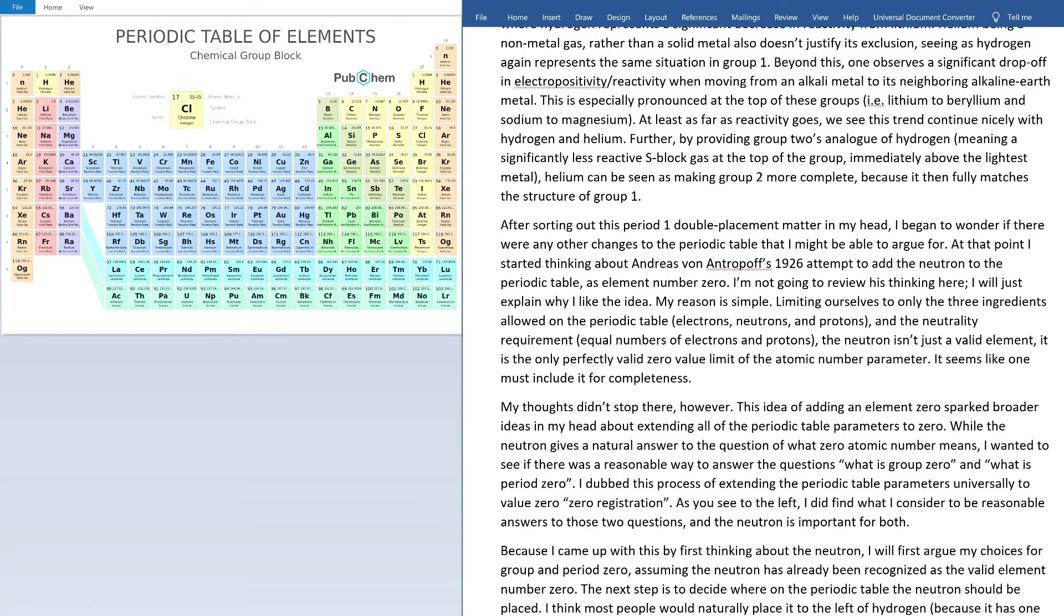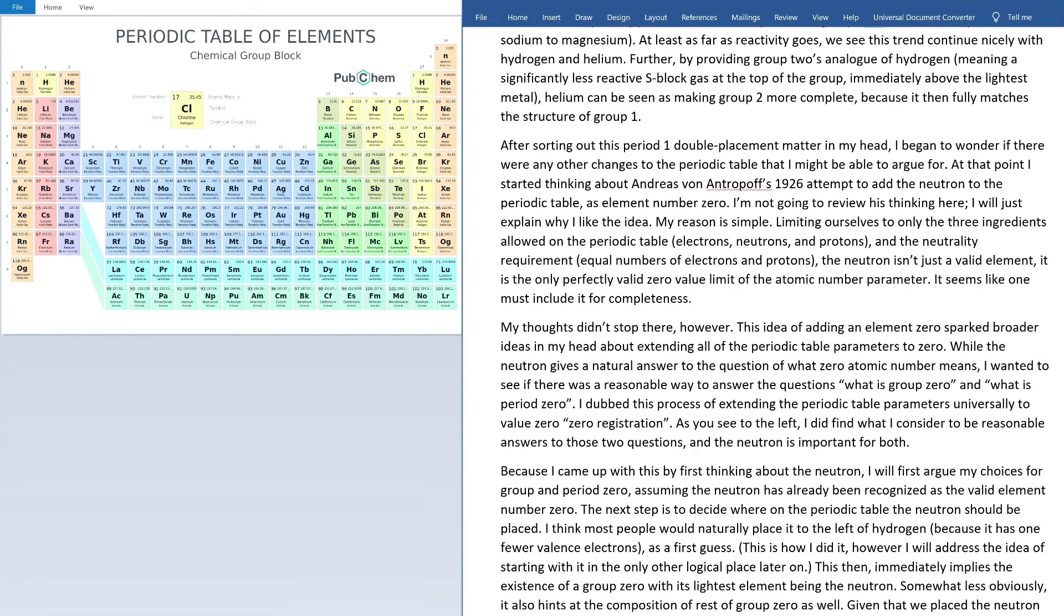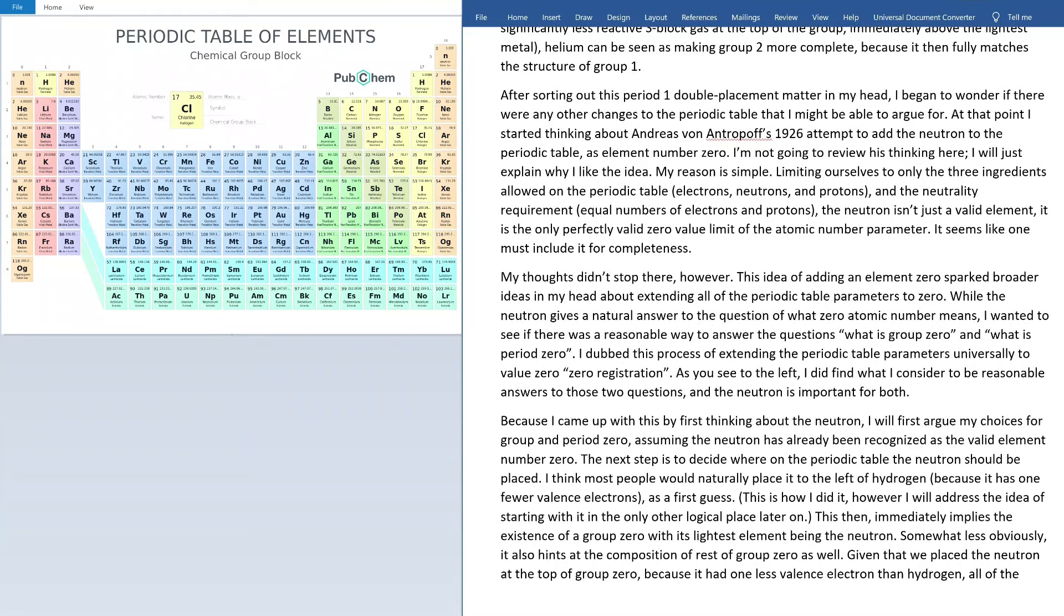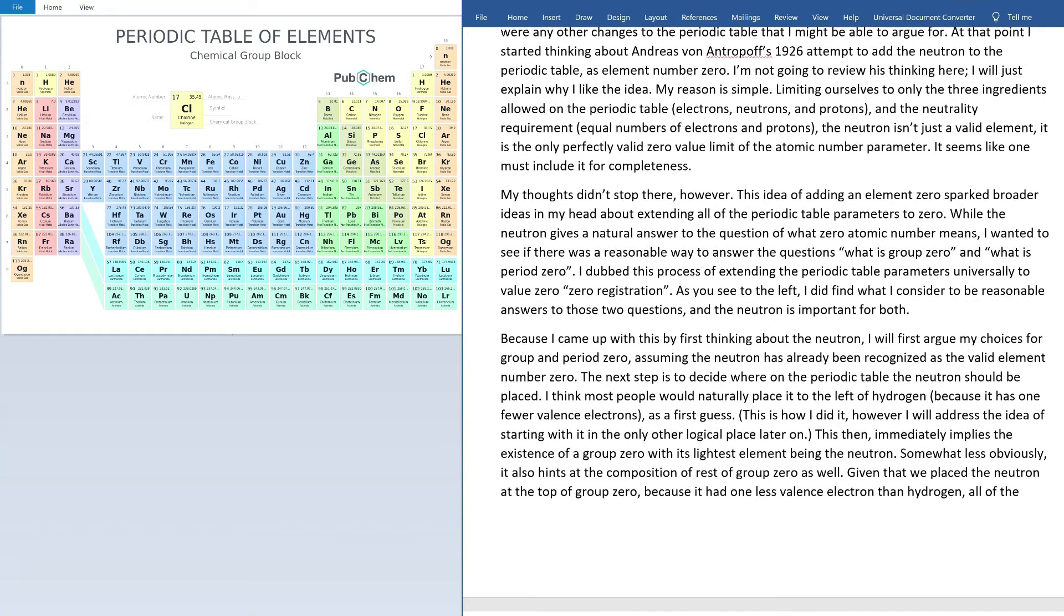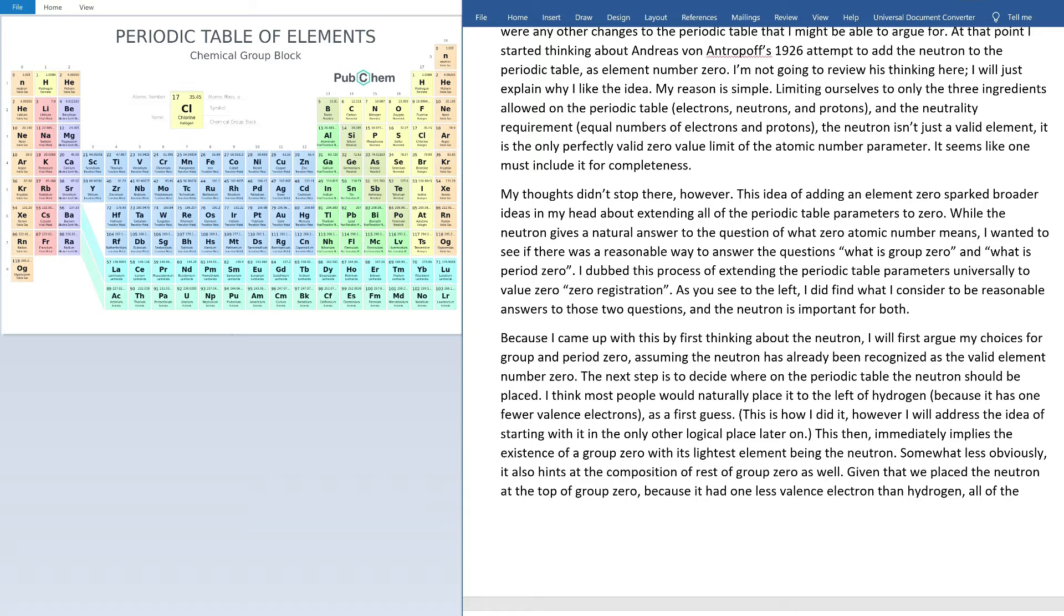At this point, I started thinking about this guy's 1926 attempt to add the neutron to the periodic table as element number zero. I'm not going to review his thinking here, I'll just explain why I like the idea. My reason is pretty simple, limiting ourselves to only the three ingredients allowed on the periodic table, electrons, neutrons and protons, and the neutrality requirement, equal numbers of electrons and protons. The neutron isn't just a valid element, it's also the only perfectly valid zero value limit of the atomic number parameter. It seems like one must include it for completeness.